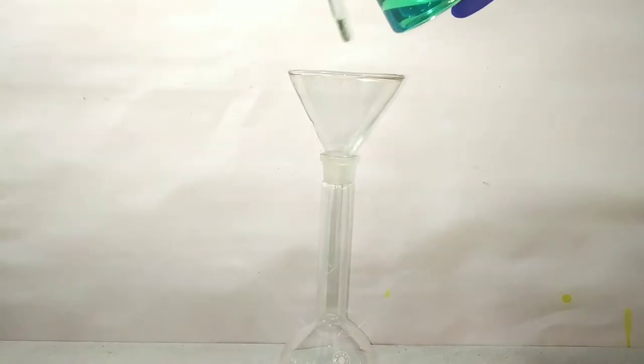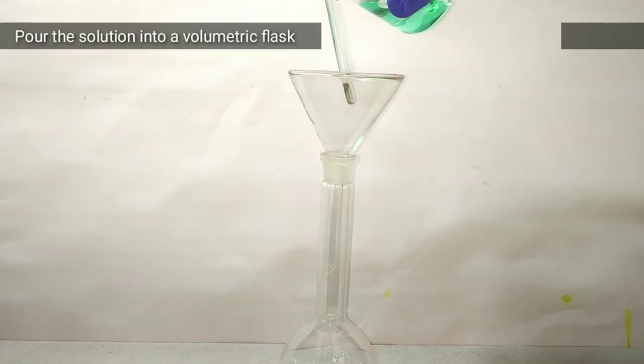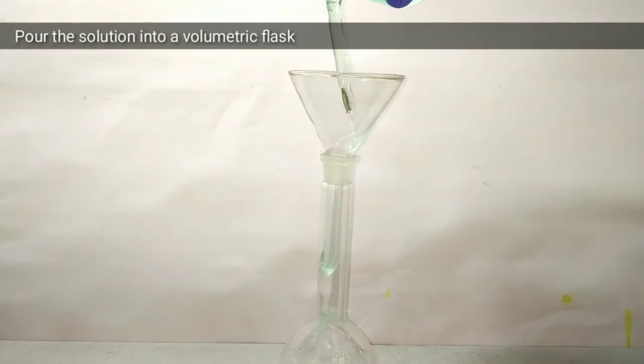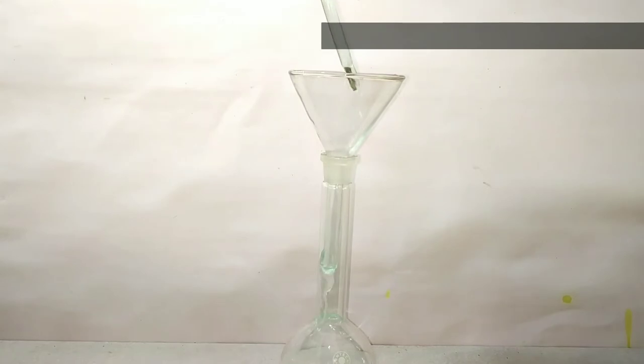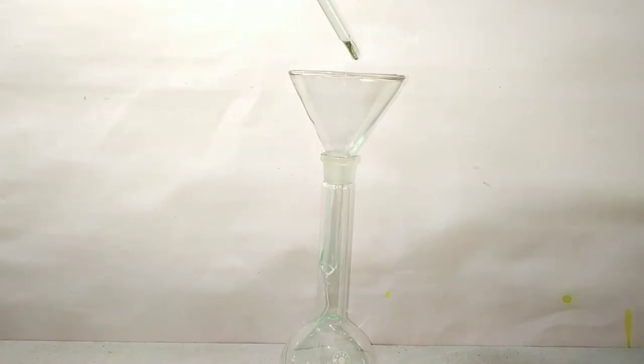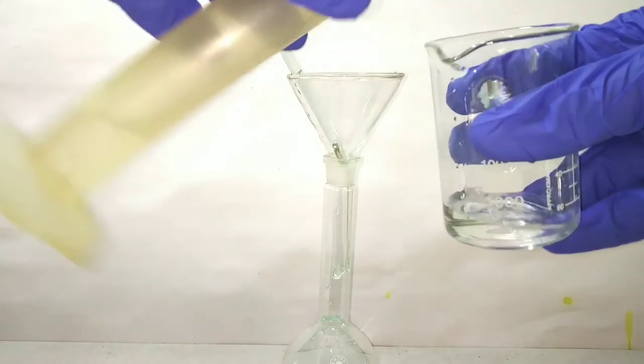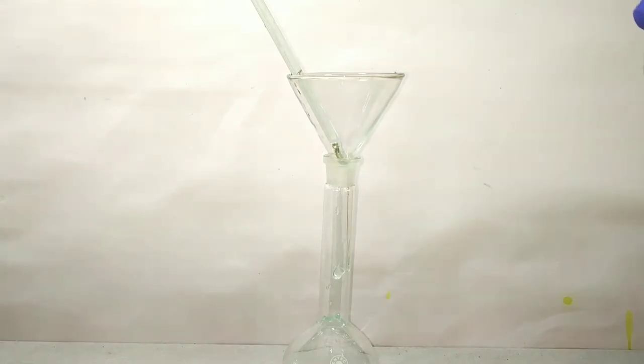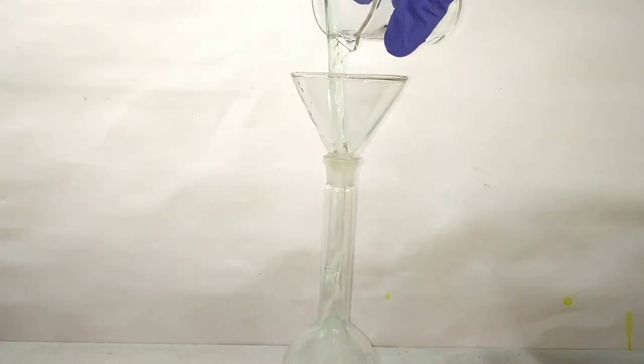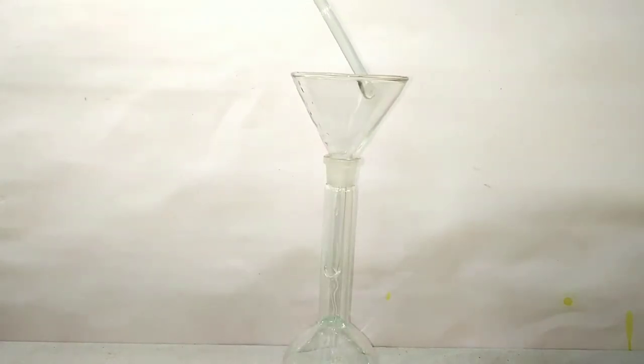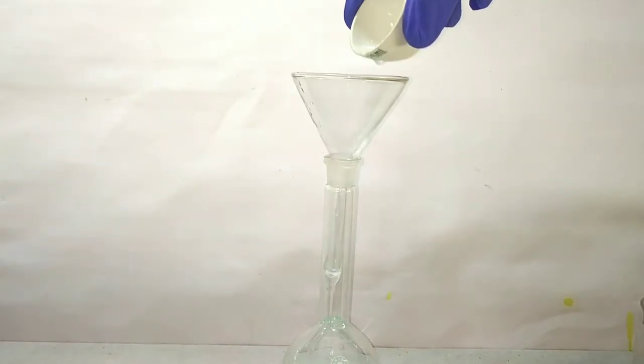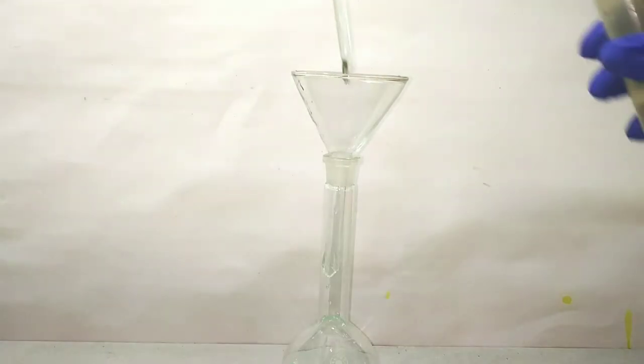Now we transfer this solution into a volumetric flask with the help of a funnel and glass rod. After transferring, wash the beaker with some distilled water, and the dish in which we had collected the solution, we also wash that with distilled water. Finally, we will wash the glass rod with which we transferred the solution.